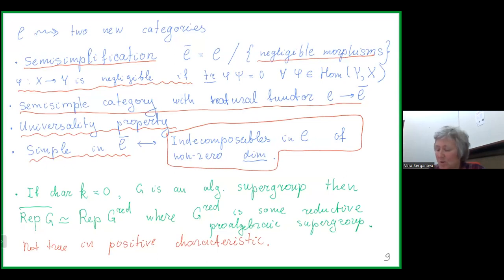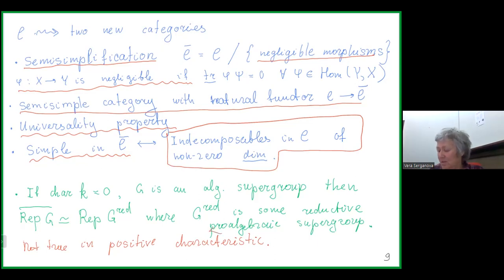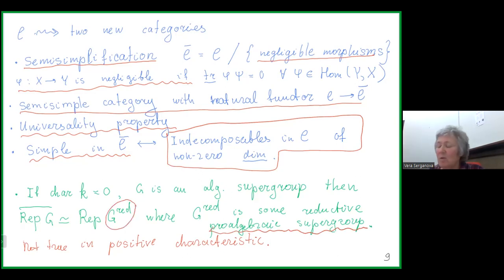When we take this quotient — considering the same objects but with morphisms quotiented by the negligible ideal — we get a semisimple category C̄ with a natural functor C → C̄ having a universality property. Simple objects in C̄ are the same as indecomposables in C with non-zero categorical dimension. An important remark: if characteristic of k is zero and we start with an algebraic supergroup and take the semi-simplification, we get the category of representations of a certain reductive supergroup — called the reductive envelope — which may be a pro-algebraic group.